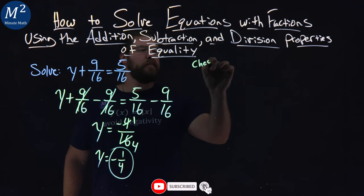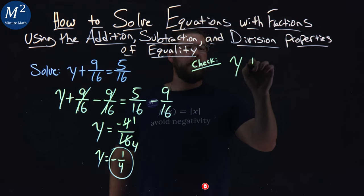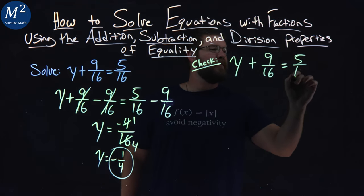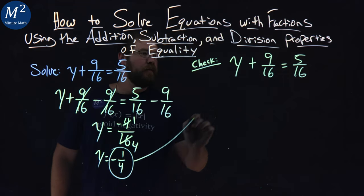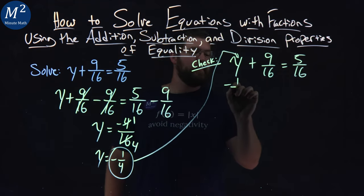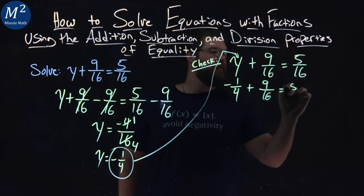Now, let's check this. How do we check it? We rewrite our equation, y plus 9 16ths equals 5 16ths. And, we're going to plug in this negative 1 4th in for y. Negative 1 4th plus 9 16ths equals 5 16ths.